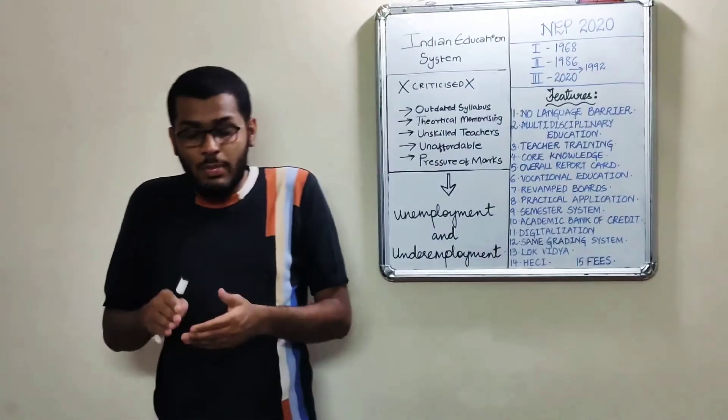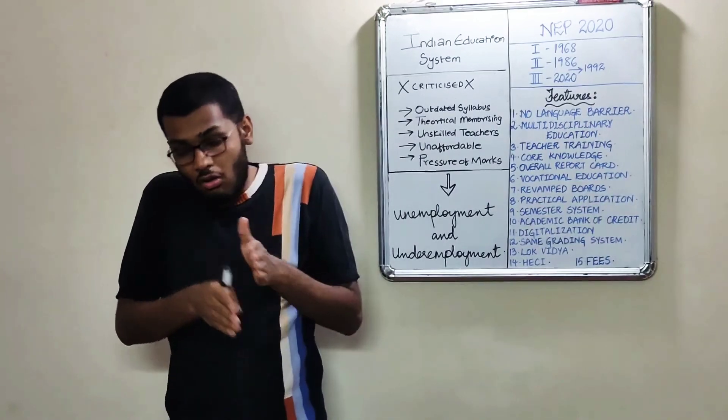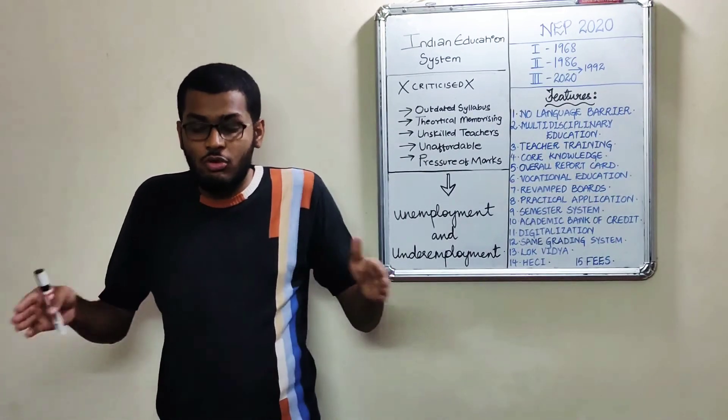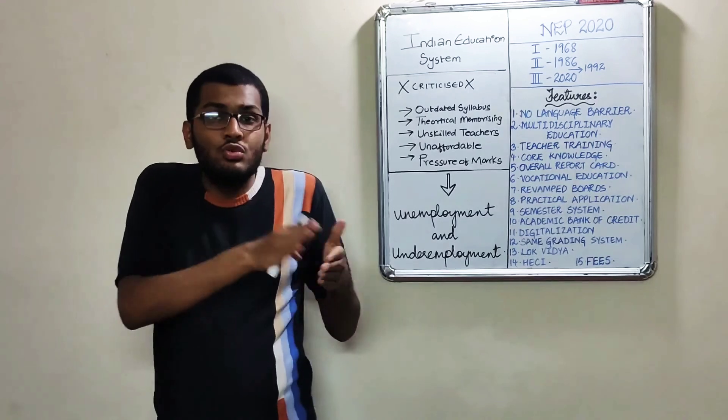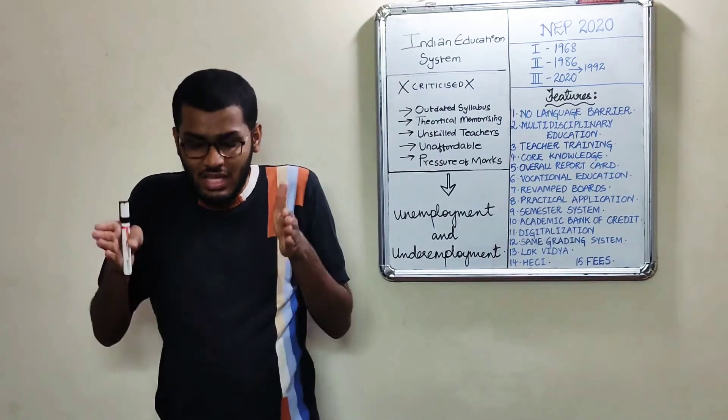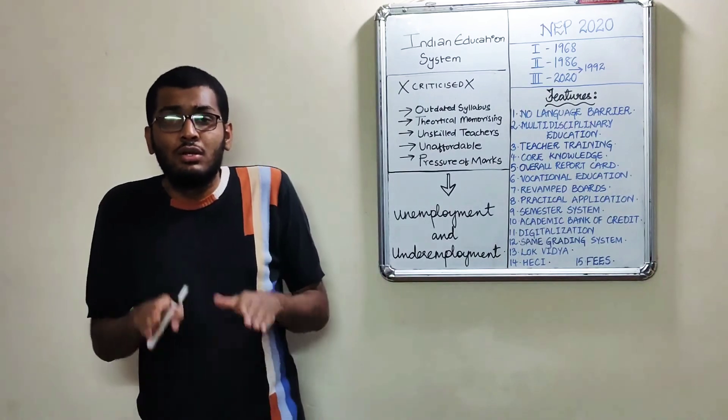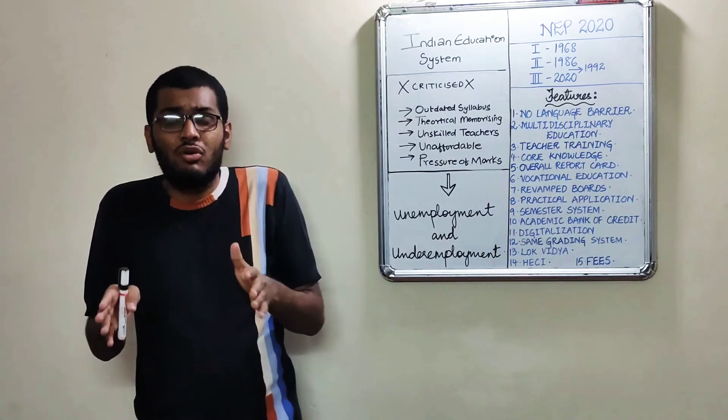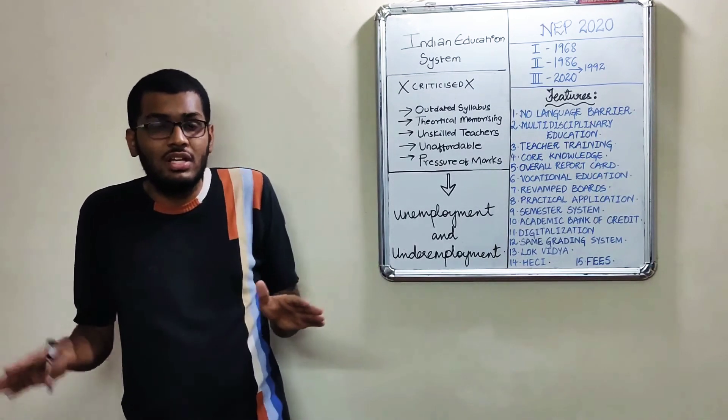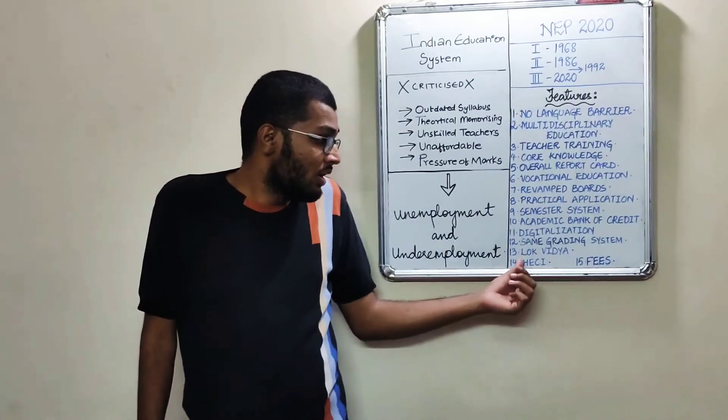Number fourteen is HECI. So apart from law and medicine, all other departments of education would be under one board rather than UGC, AICTE, all separate ones. There will be only one board - Higher Education Commission of India - under which everything will be. So that would be a more centralized form, and there will be less chances of confusion and conflict if this is made.